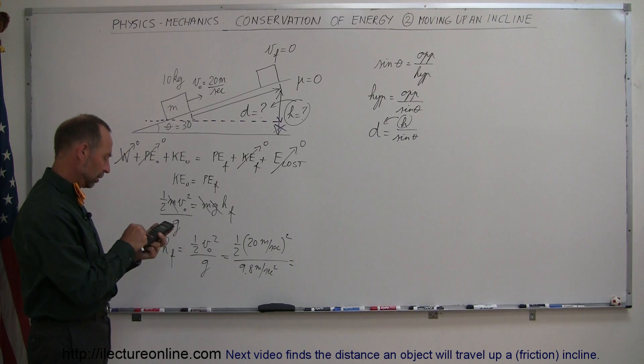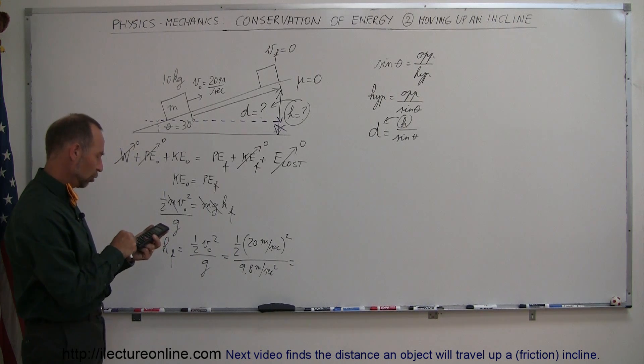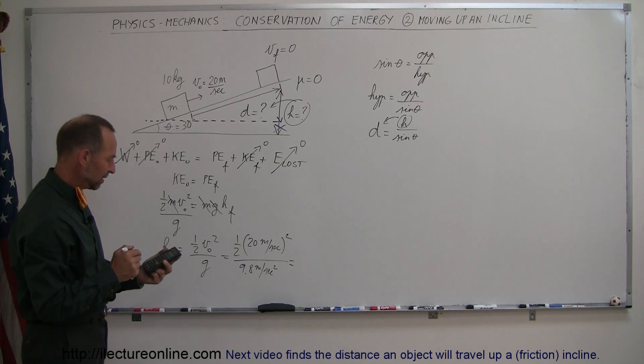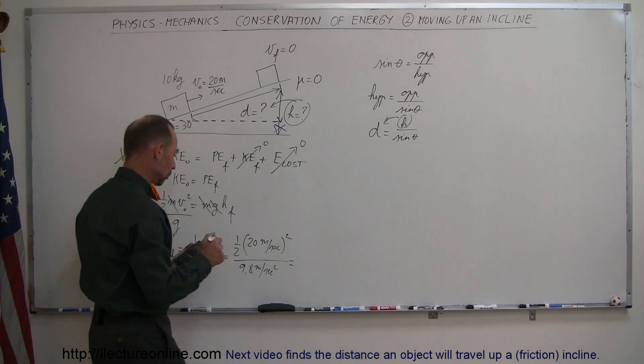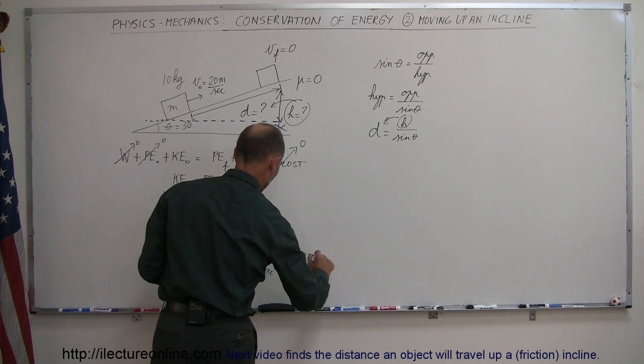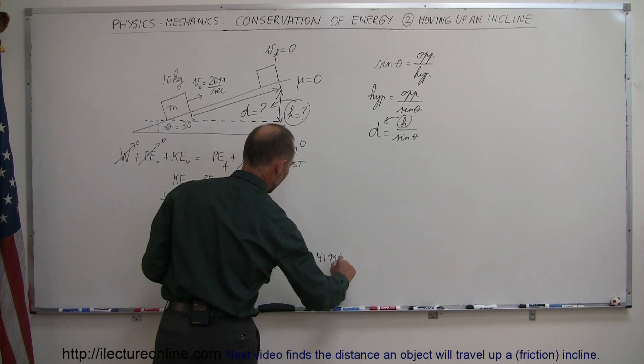So that gives us 400 divided by 2 and divided by 9.8, that gives us 20.41 meters.